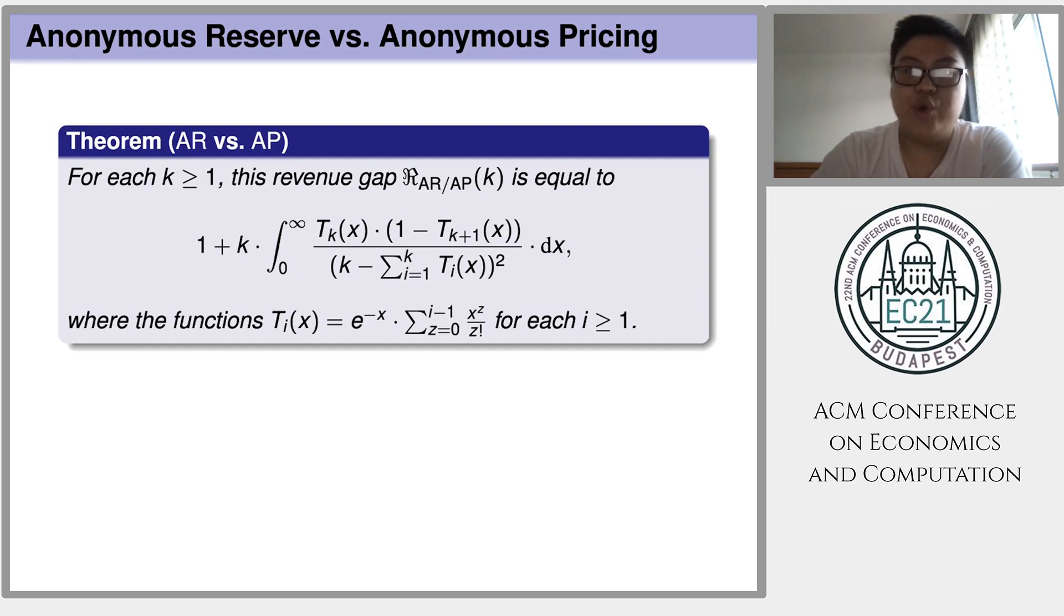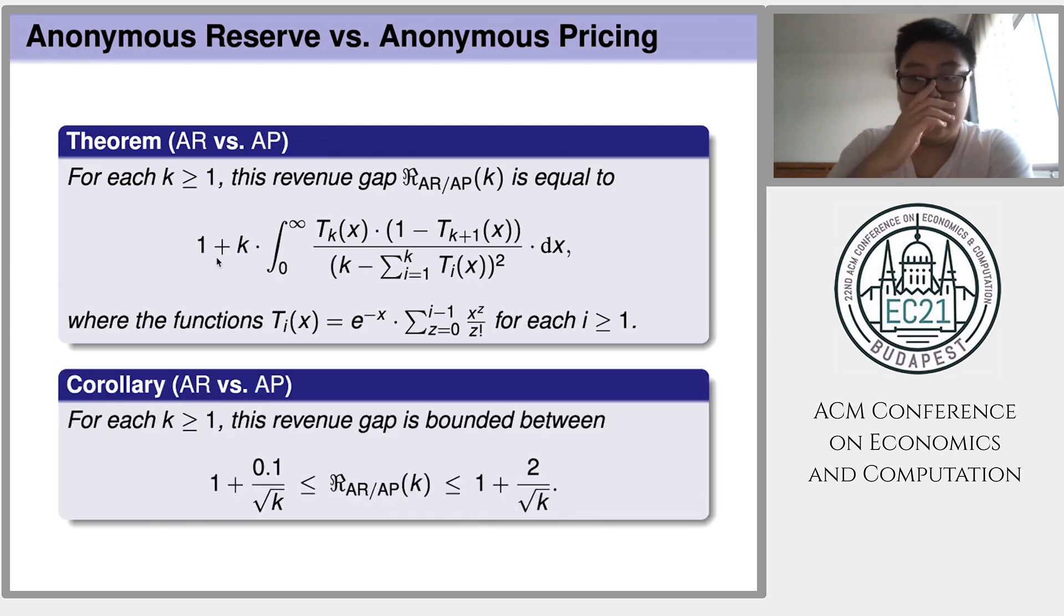More precisely, we prove that the revenue gap between AR and AP can be written down as this integral formula. It's quite complicated and has no elementary formula expression. But anyway, with actual calculation, we can prove that for any fixed number of copies k, the revenue gap is of order 1 plus 1 over root k. This bound is tight up to the constant before the root k factor.